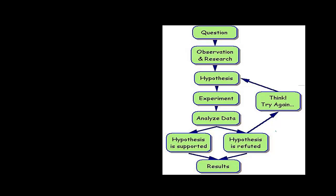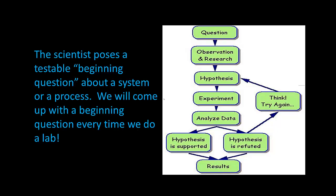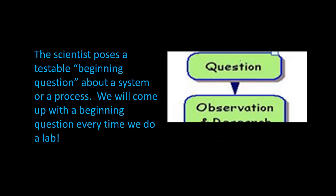First, you have your scientific method — you should have seen this before. The first step is that the scientist poses a testable beginning question about a system or a process. We will come up with a beginning question every time we do a lab. You need to write in your notes, under scientific method number one, the word 'question.'